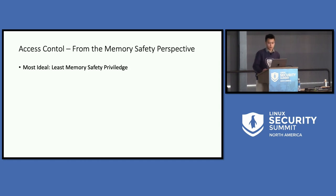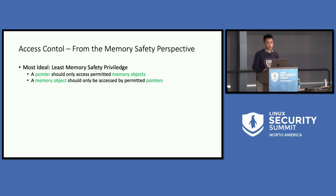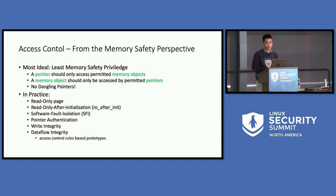But let's think about at the low level — the program level — from the memory safety perspective, or the relationship between pointers and their pointed-to objects. The most ideal access control here should follow the least memory safety privilege, which means a pointer should only access permitted memory objects, or a memory object should only be accessed by permitted pointers. So no dangling pointers that should point to objects they should never point to in the source code.